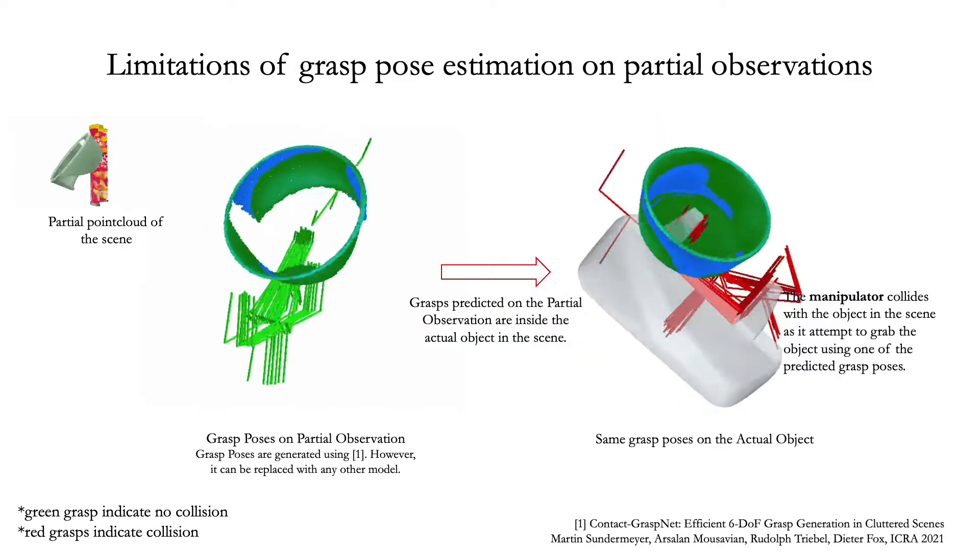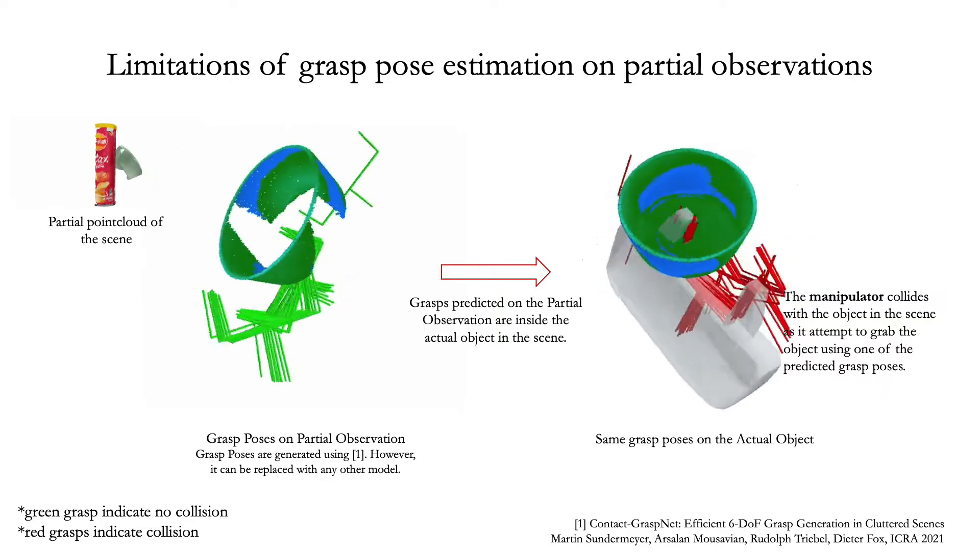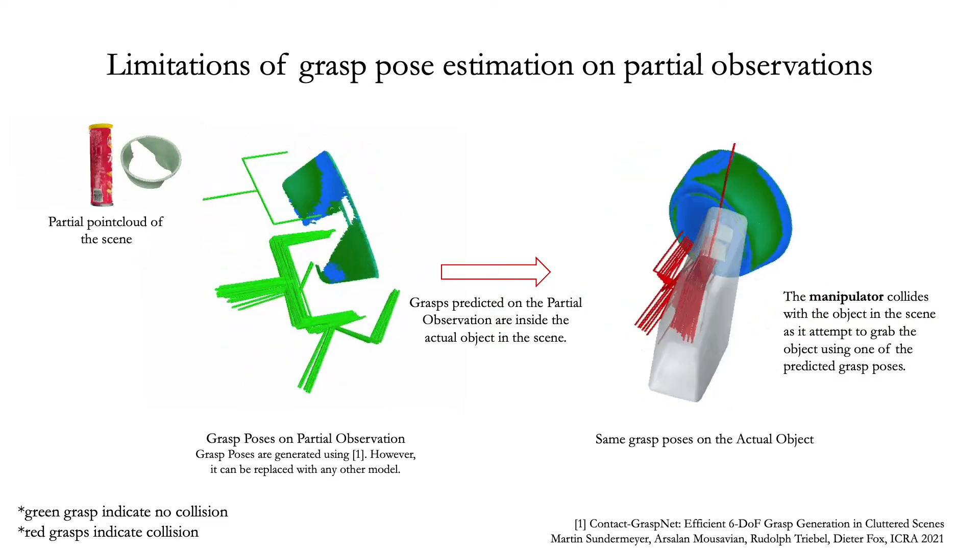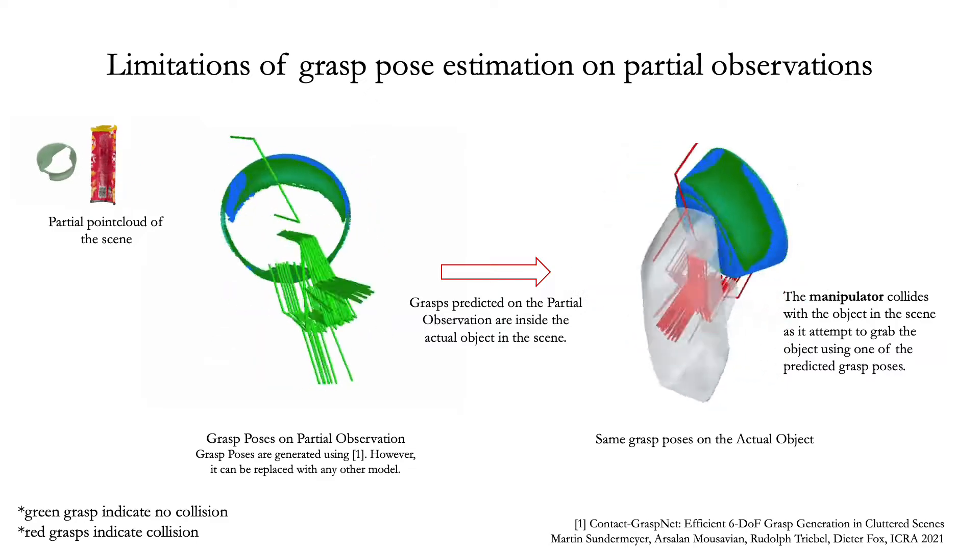However, when we transfer these same grasps to the actual object on the table, we see that they are inside the actual object, as indicated by the red color of the grasps.